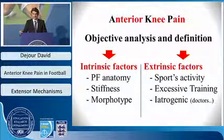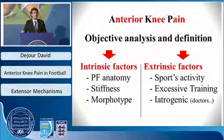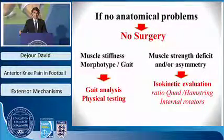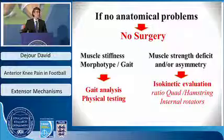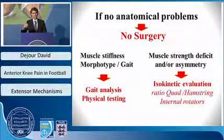In conclusion, anterior knee pain can have an objective analysis and definition. You have two things: the intrinsic factors — the patellofemoral anatomy, the stiffness, the morphotype of your patient — and also the extrinsic factors, which are the sports activities, the excessive training, and also iatrogenic things. If you have no anatomical problem, there is no surgery at all. If you have muscular stiffness, morphotype, or gait issues, you have to do a gait analysis. Physical testing about muscle strength and deficit, isokinetic evaluation, and testing the ratio between quadriceps and hamstrings, as well as the internal rotators, are really important in the diagnosis.